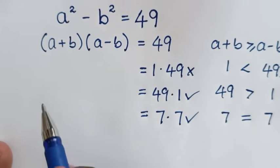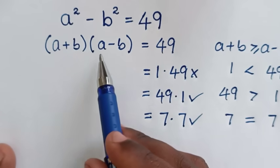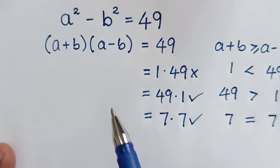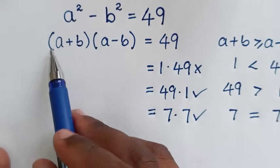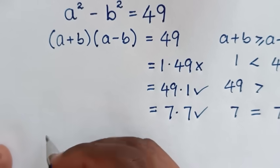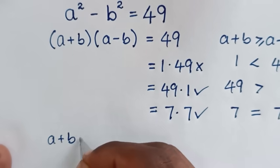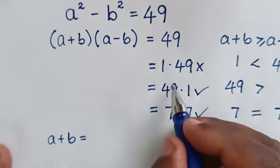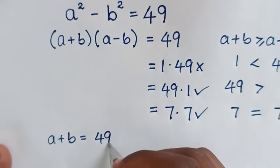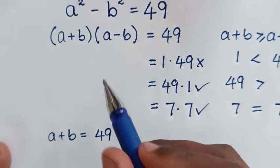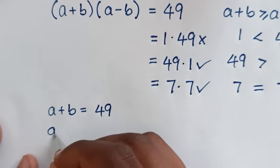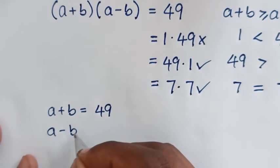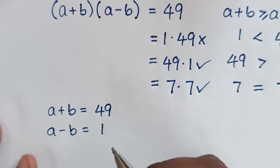Using the first valid selection, a plus b times a minus b equals 49 times 1. So a plus b is equal to 49, and a minus b is equal to 1.